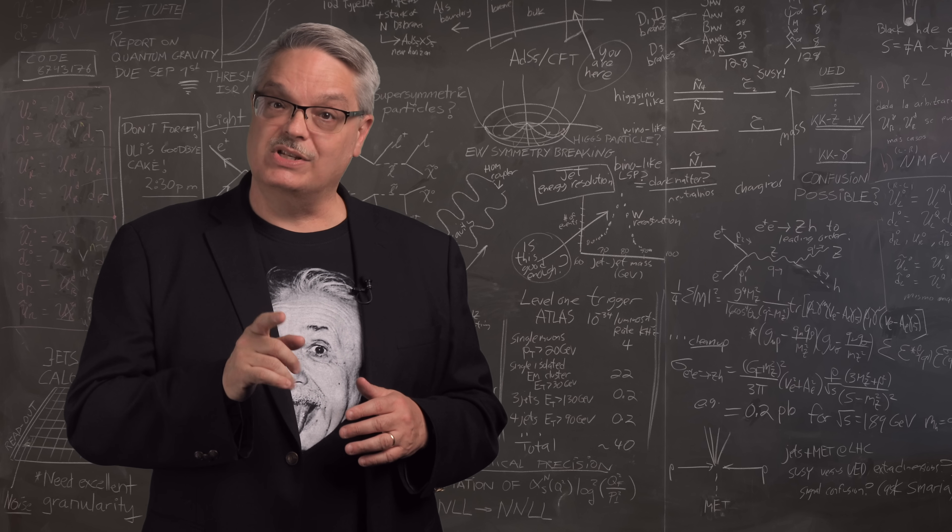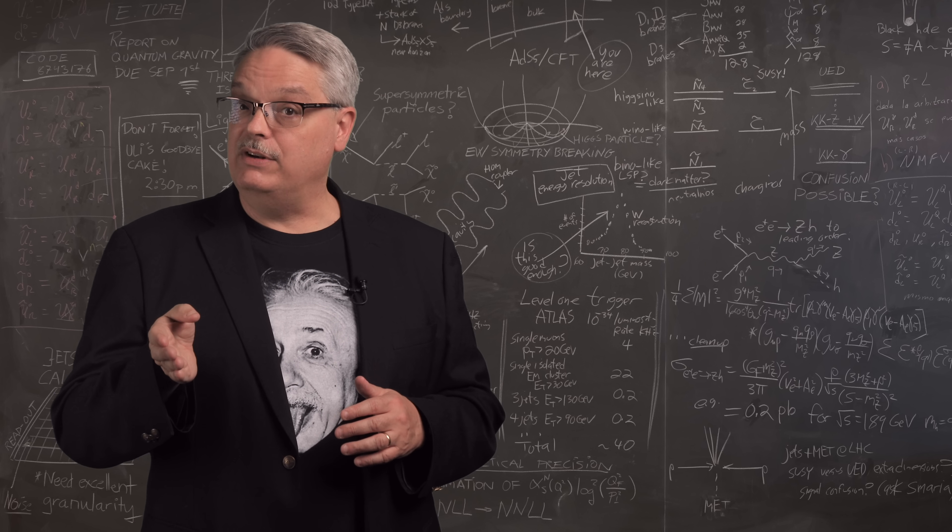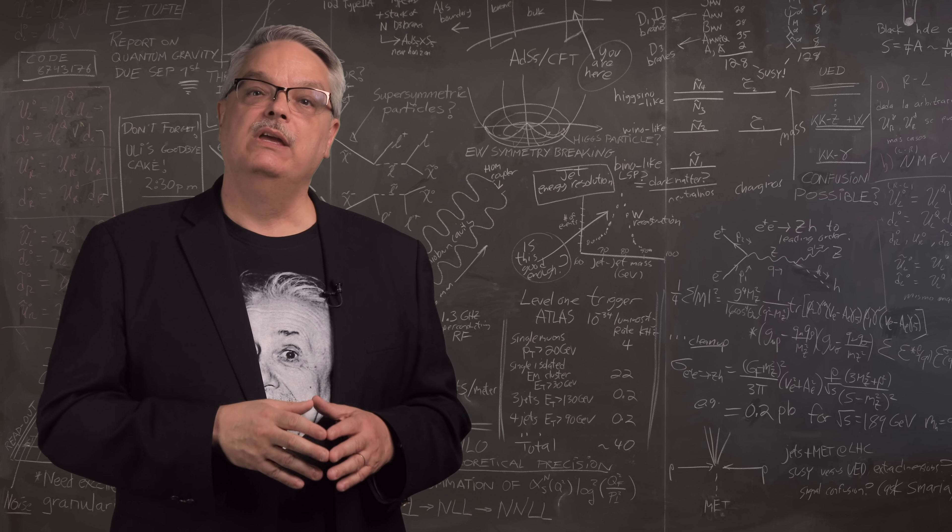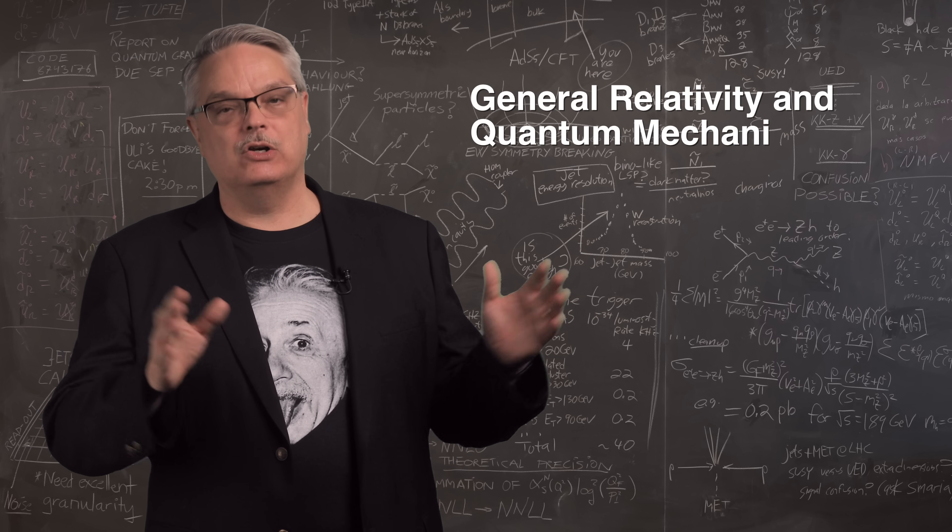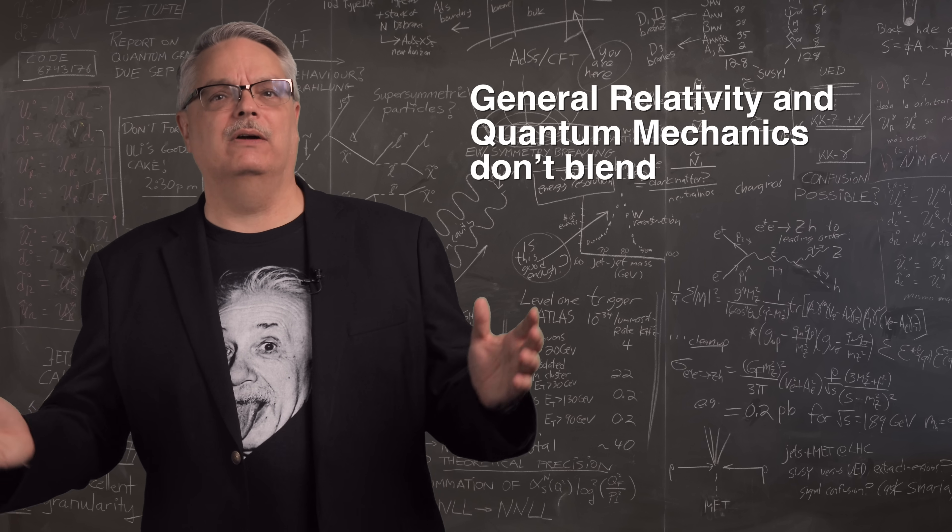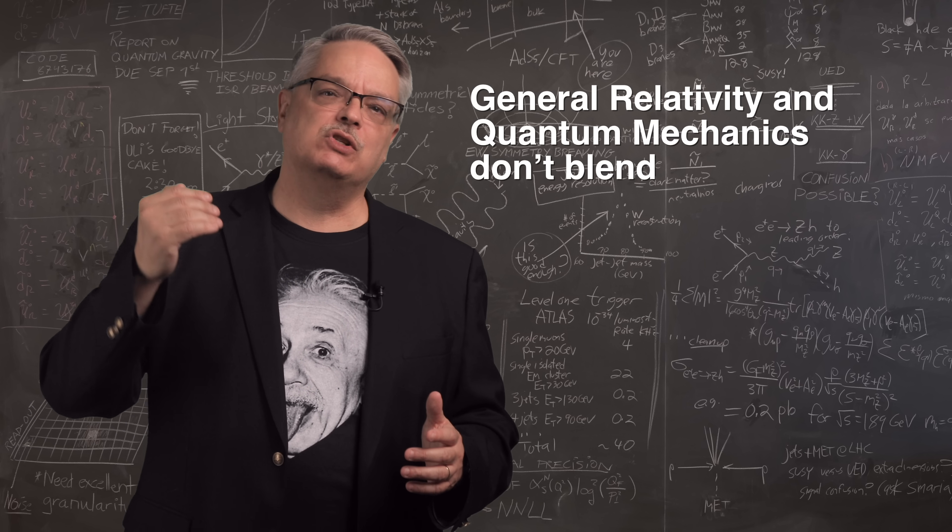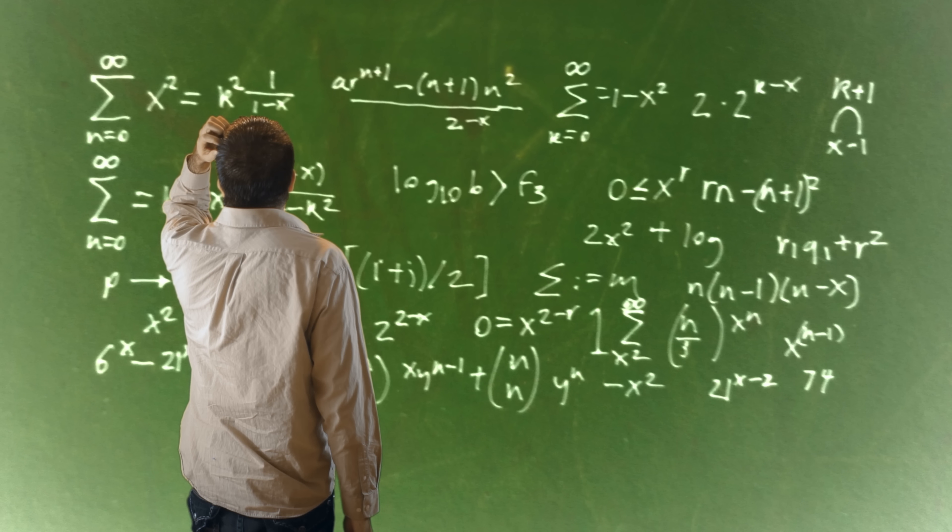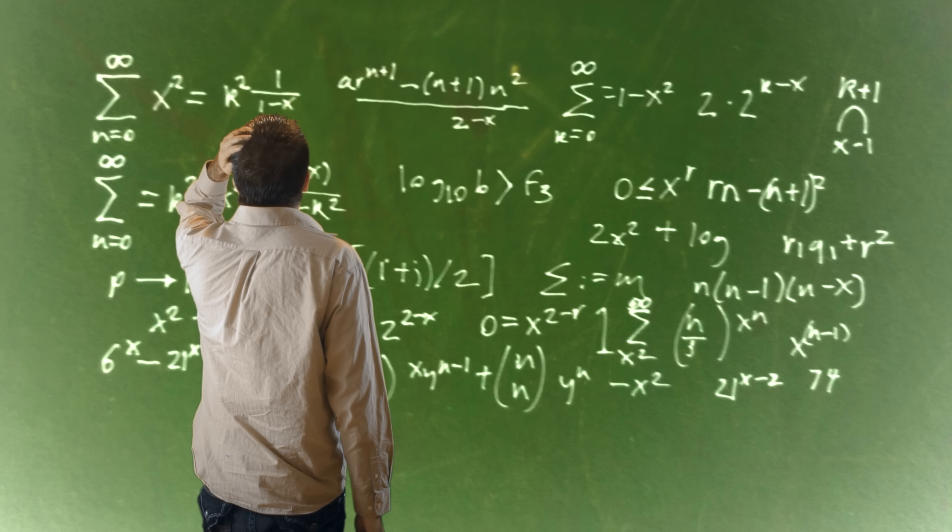However, when general relativity, which is to say Einstein's theory of gravity, meets quantum mechanics, the result is very different. The two theories simply can't coexist. You get infinities and conceptual difficulties everywhere. And even though some of the very smartest minds of the last century have worked on this, it's still a problem. We don't know how to merge quantum mechanics and gravity.